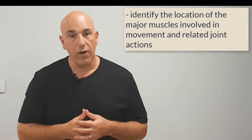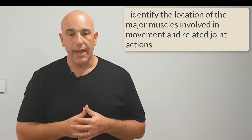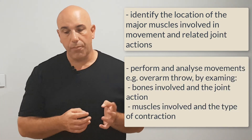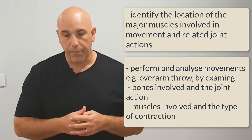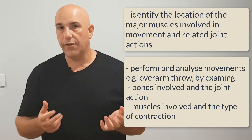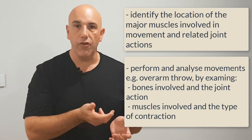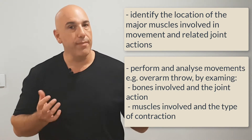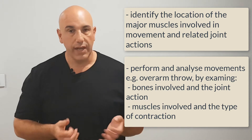Students will learn about identifying the location of the major muscles involved in the movement and the joint action. The second dot point is to analyze performed movements — for example, the overarm throw — identifying the muscles involved and the joint actions.